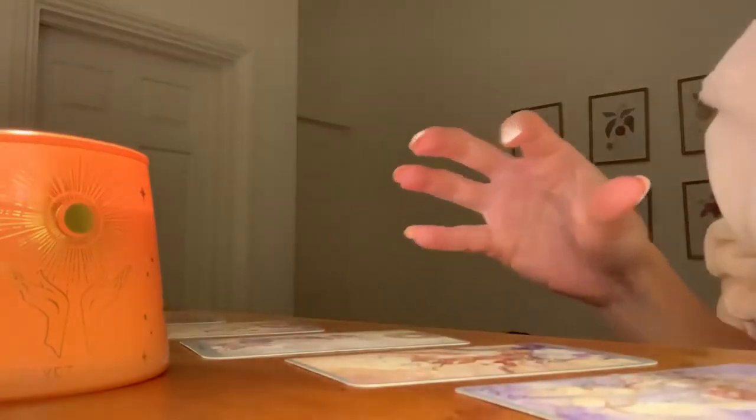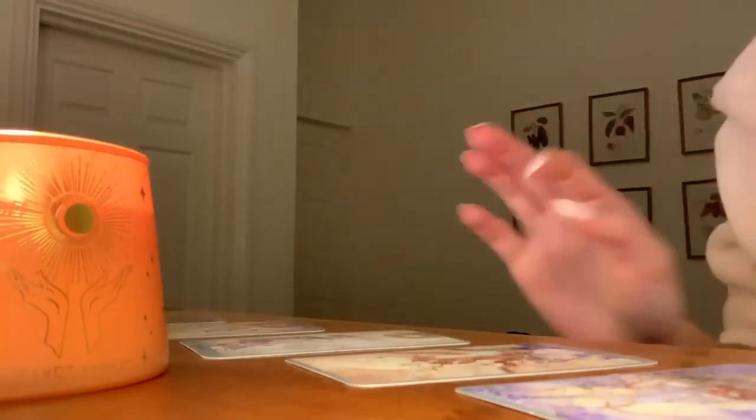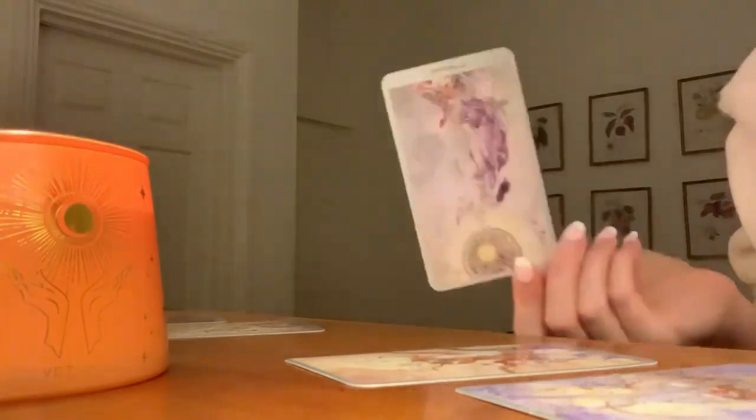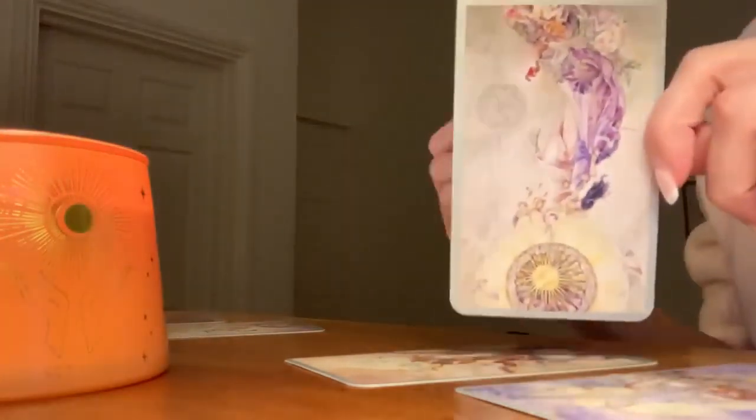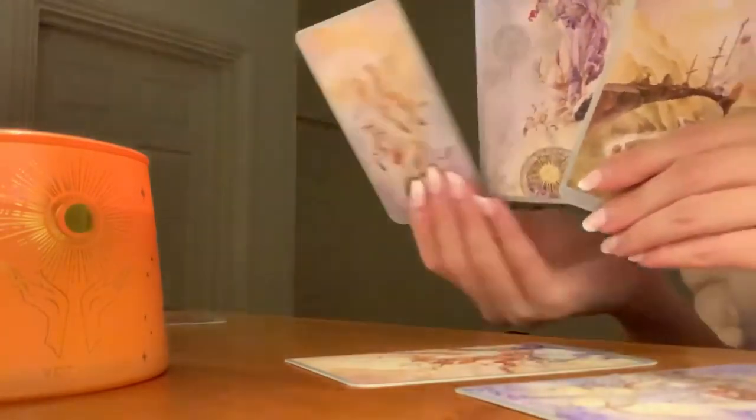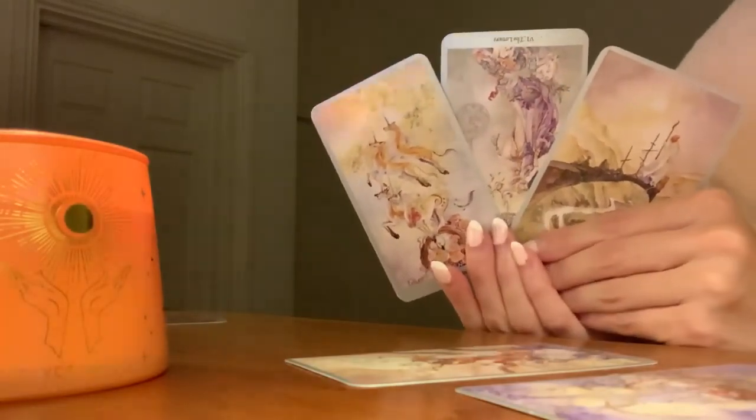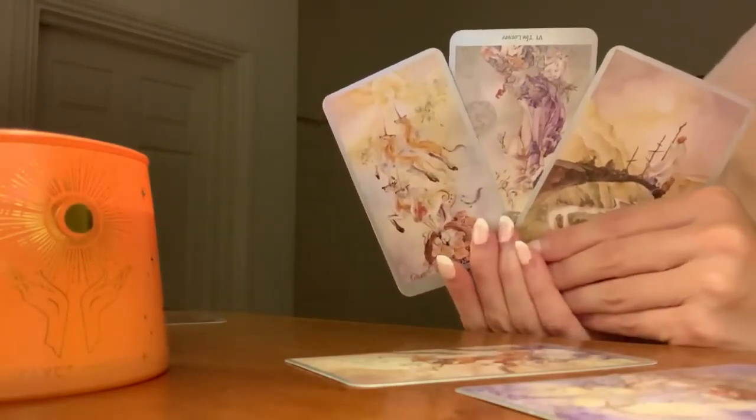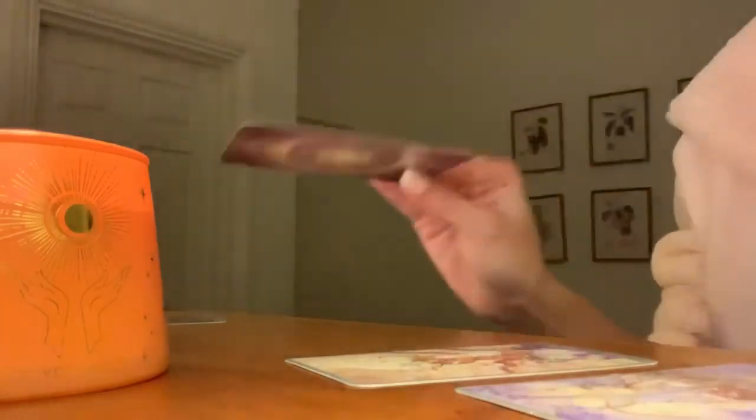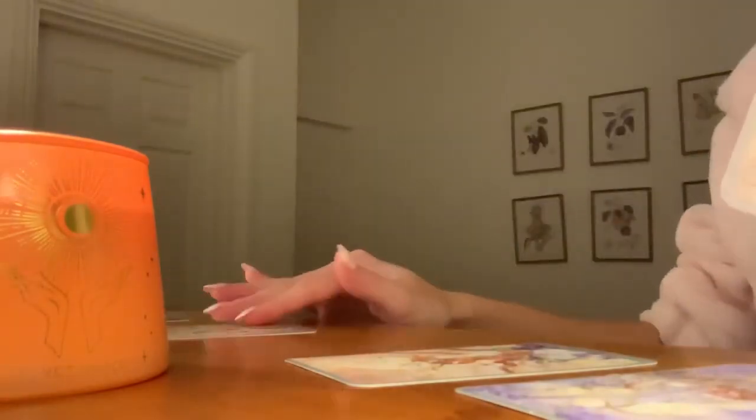Straight away the words that come to mind Earth signs are there's a happily ever after, but it's happening in the distant future rather than the immediate future. There's obviously some sort of connection here, the Lovers has come up reversed, so right now this connection is not flourishing how you want it to. But the long distance card is here and the four of wands is here, so there's a celebration or a union in the distant future. You might need to be extra patient for this love connection to work.